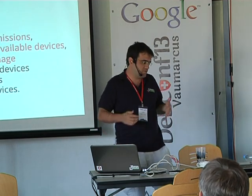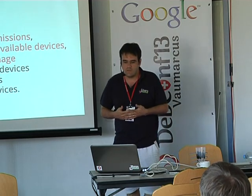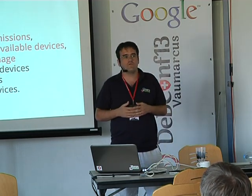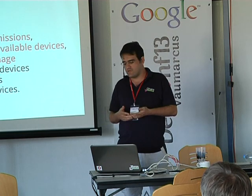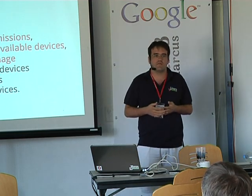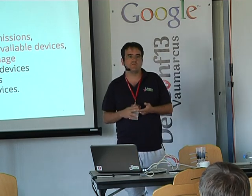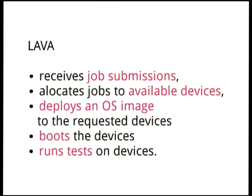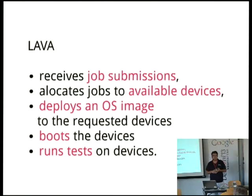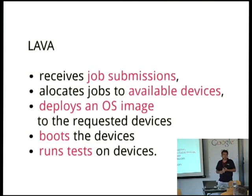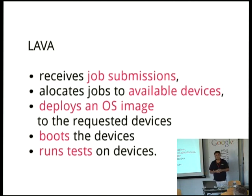Lava is a platform that receives job submissions, allocates those jobs to available devices, and deploys an OS image there. Linaro right now deploys Debian, Ubuntu, Fedora, Open Embedded, and Android to test Linaro builds and to do kernel continuous integration. Lava will boot the device using that deployed image, run tests on the device, and then get the test output so you can analyze results in a dashboard.